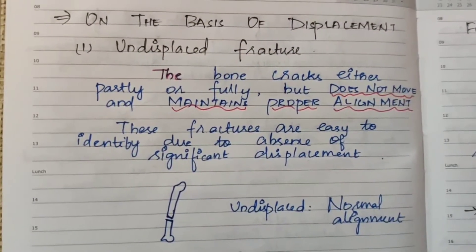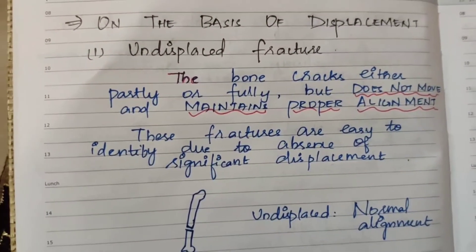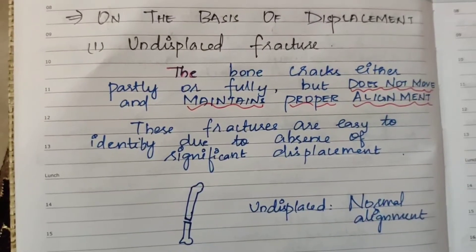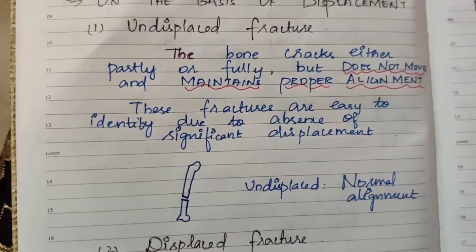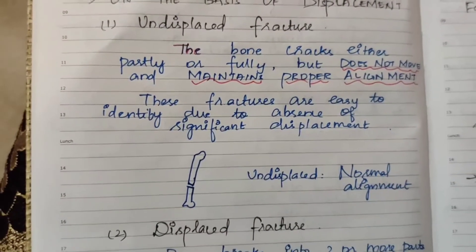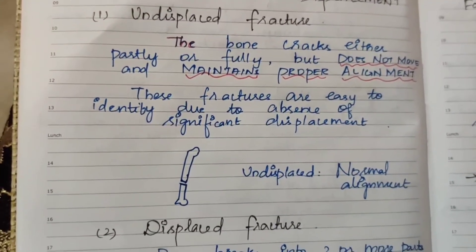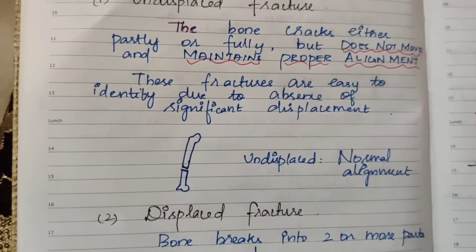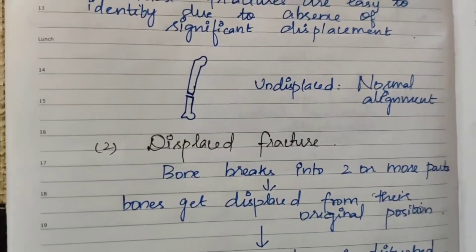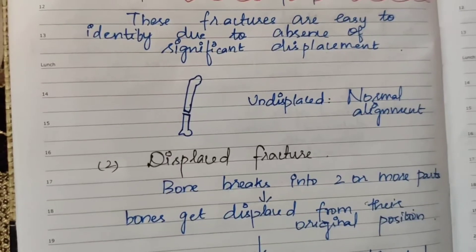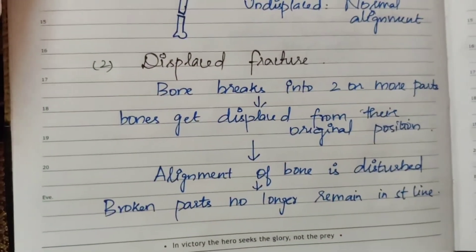Second category: on the basis of displacement. Undisplaced fracture — the bone cracks either partially or fully but does not move and maintains proper alignment. The fracture is present but it will not move; it maintains the same position. These fractures are easy to identify due to the absence of significant displacement.